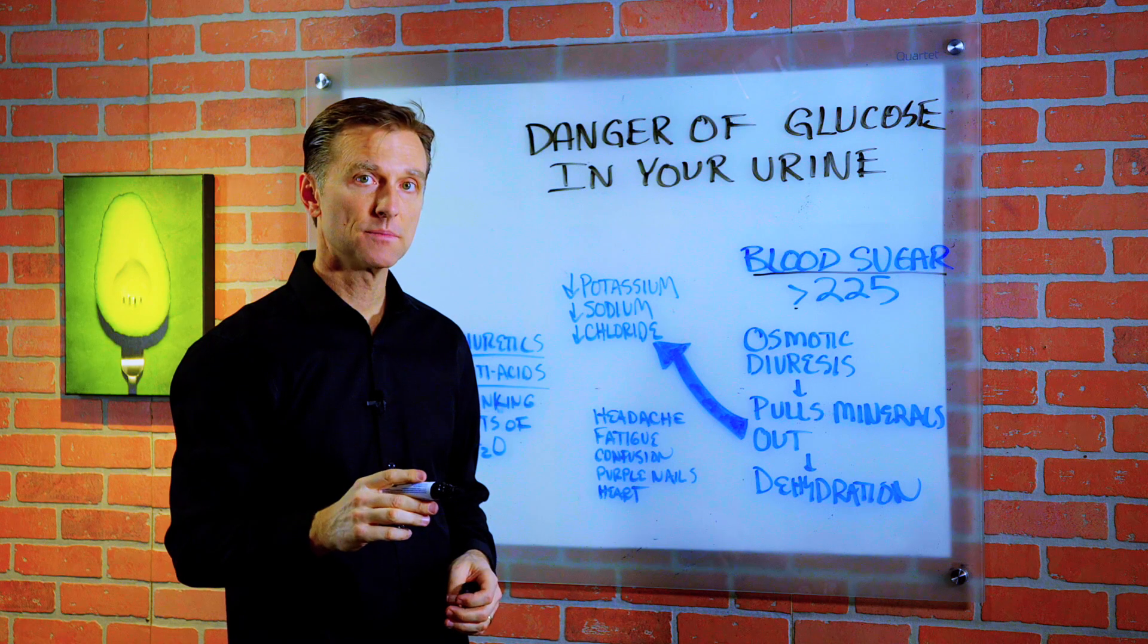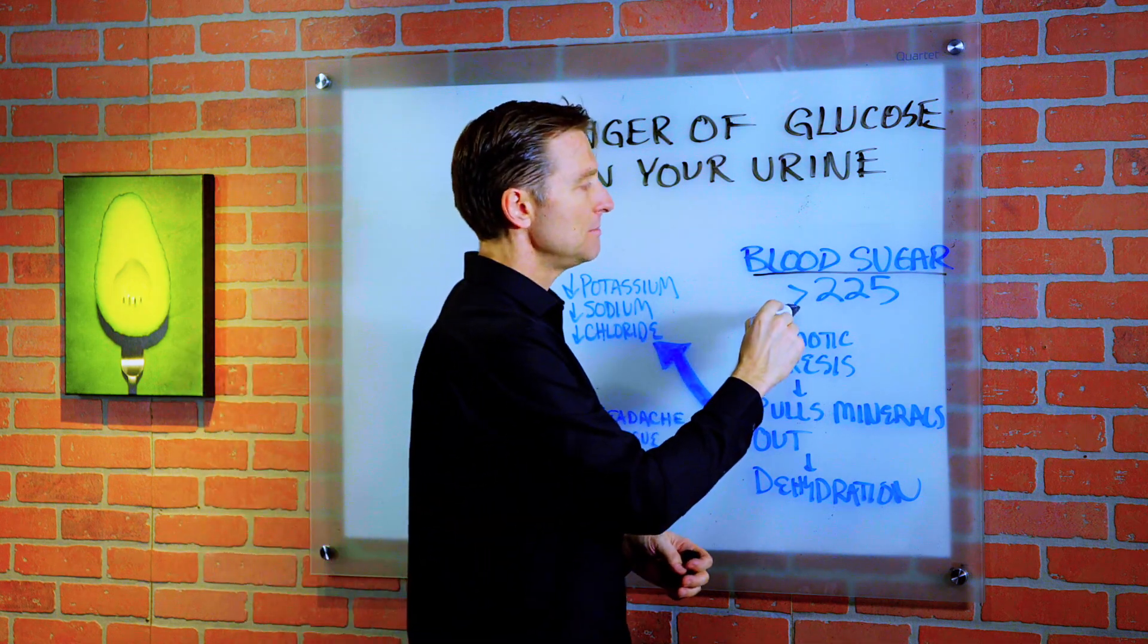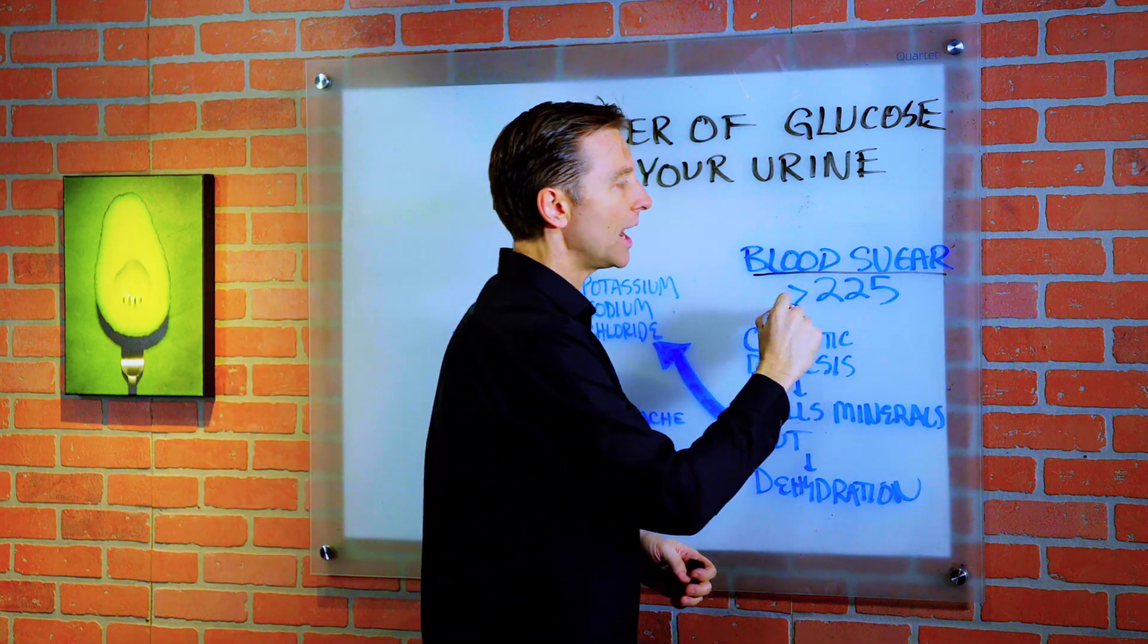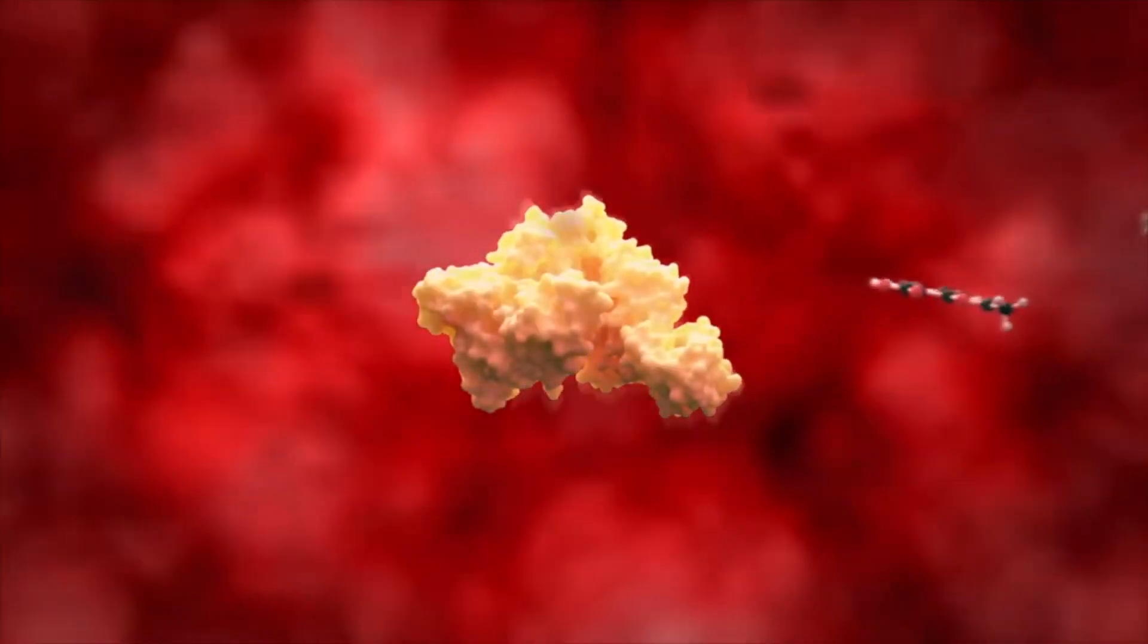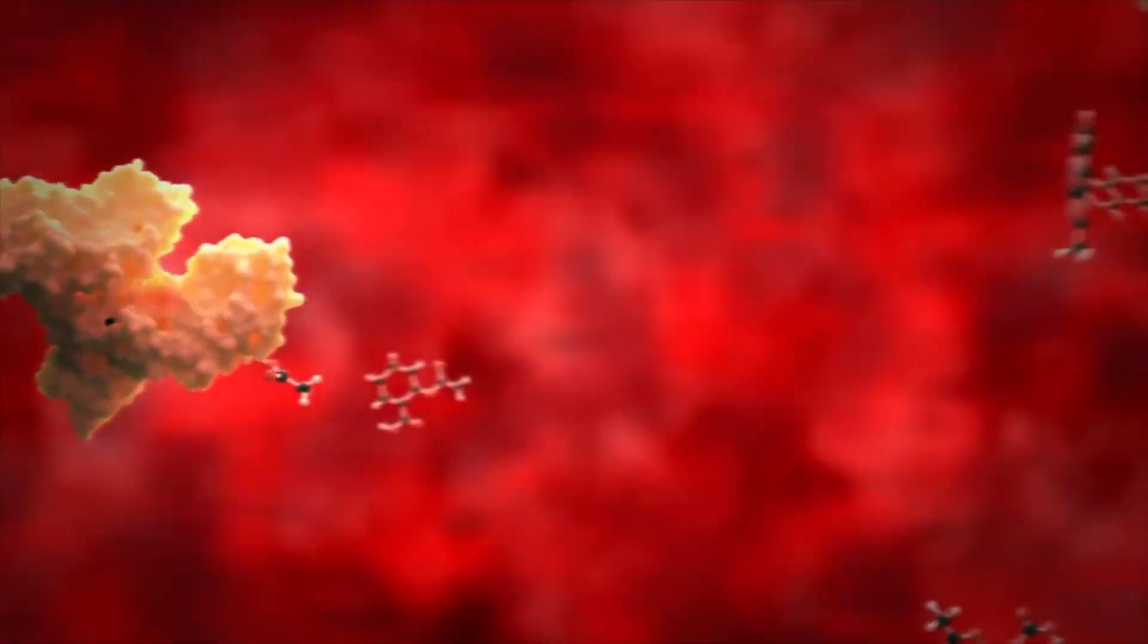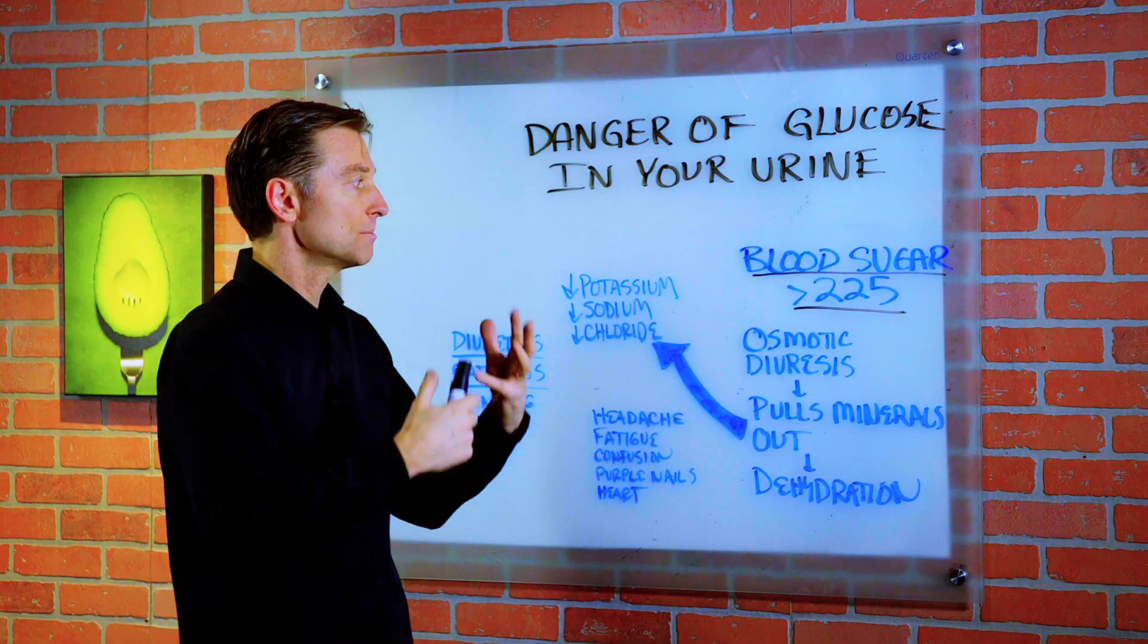That means that your blood sugars, the glucose in your blood, is minimally at 225 or more, and it's spilling off into the urine. So this is one of the ways that the body is trying to get rid of this toxic glucose by just peeing it out.